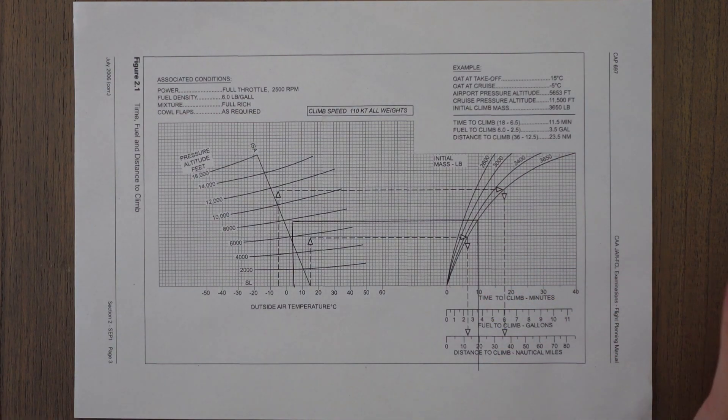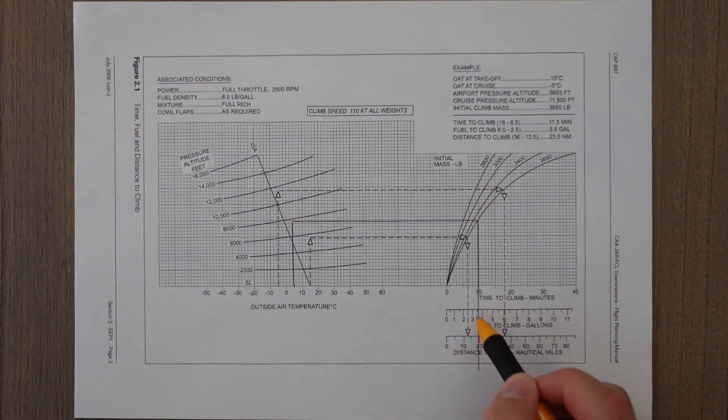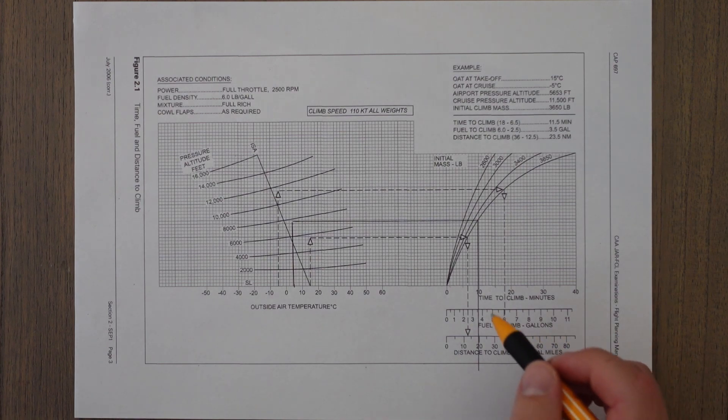Then we'll draw down all the way through to get the fuel and the distance and the time. We can see it would maybe take just under 10 minutes—about 9 or 9.5 minutes. It's about 3.5 gallons of fuel and the distance to climb is about 19 miles.